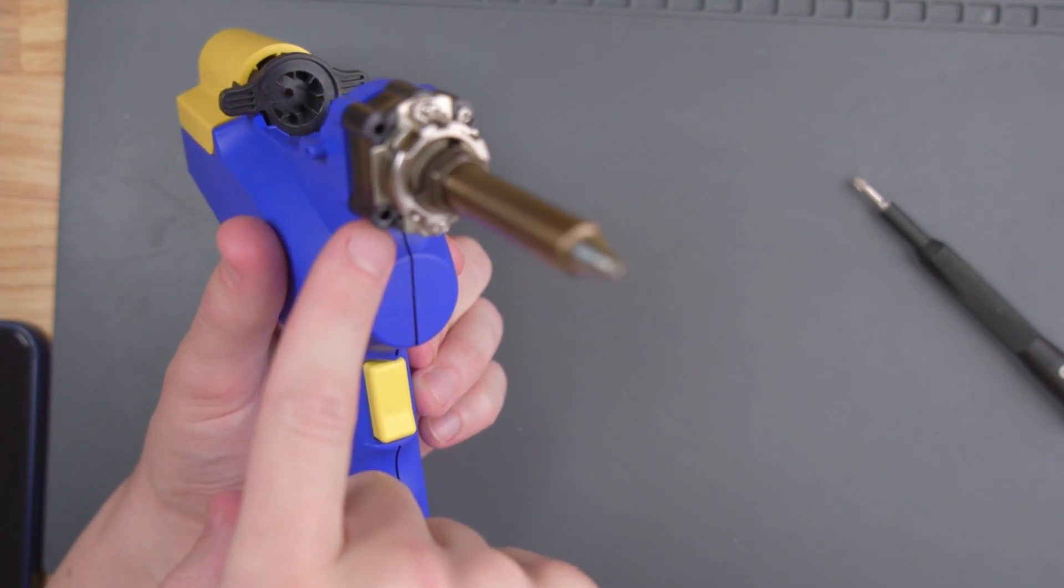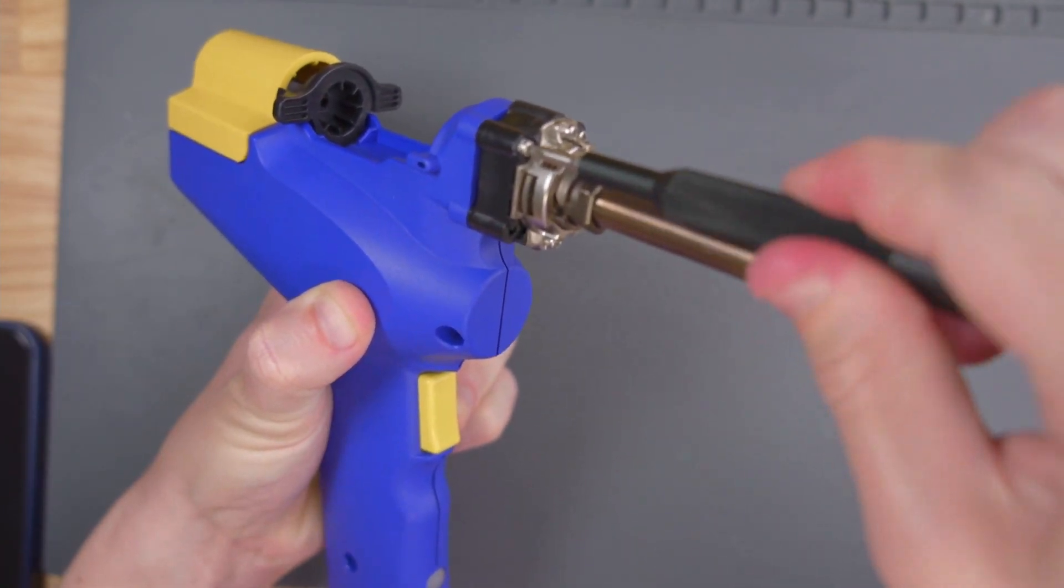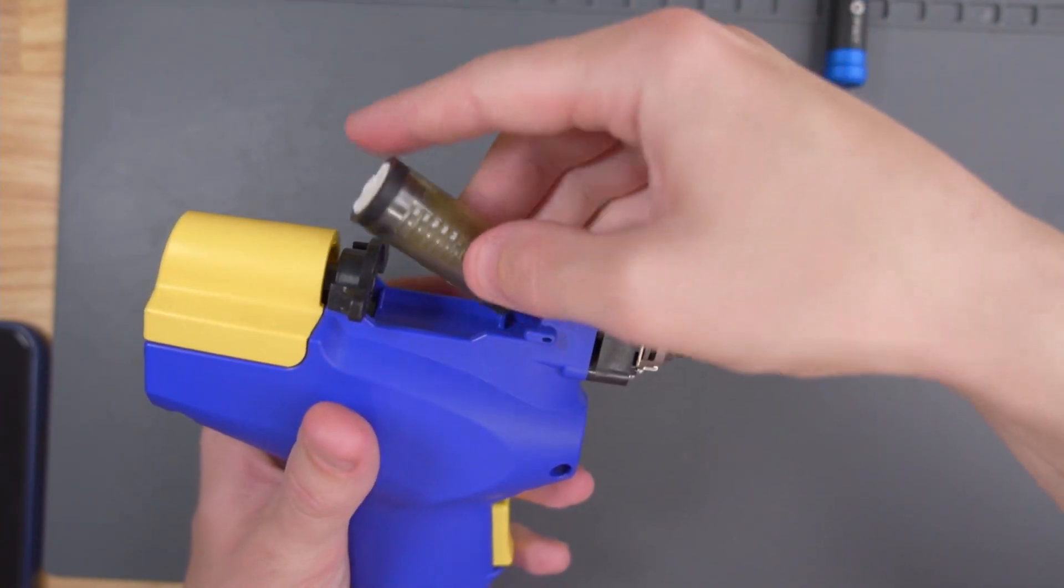Let's put these two screws up here to secure the nozzle to the other half of the shell. Then all I've got to do is put the filter back in.